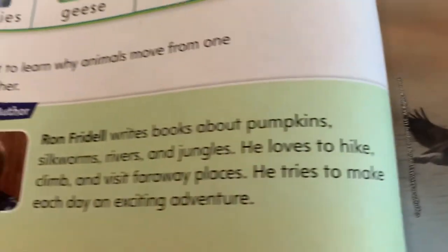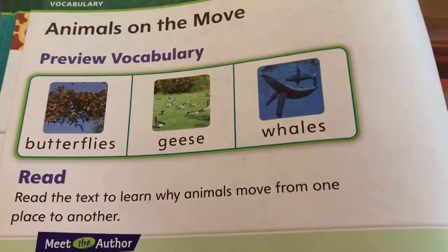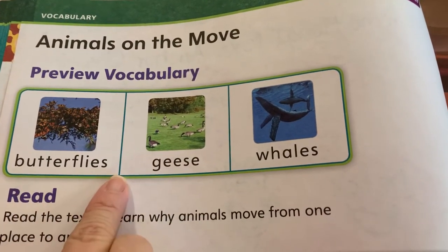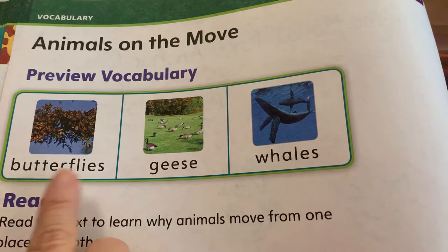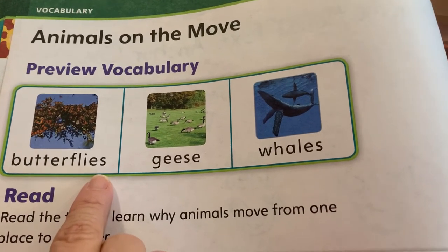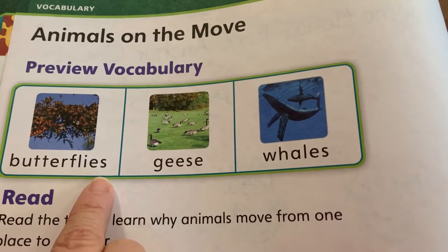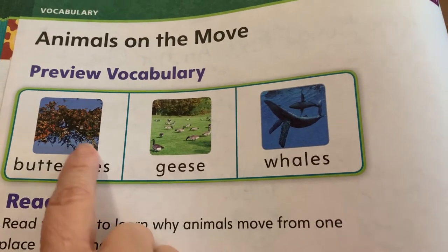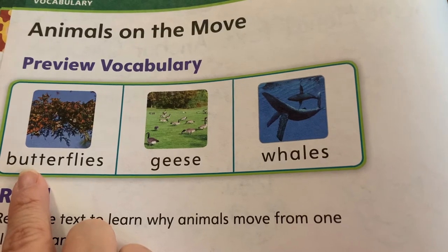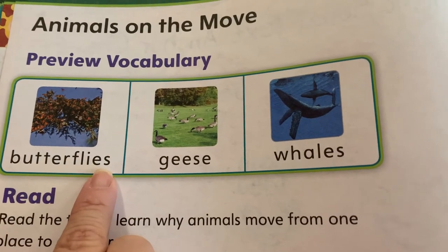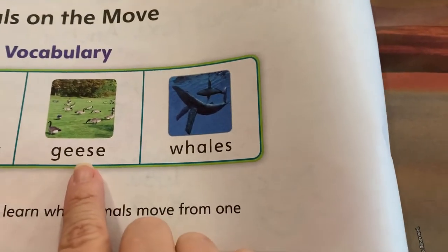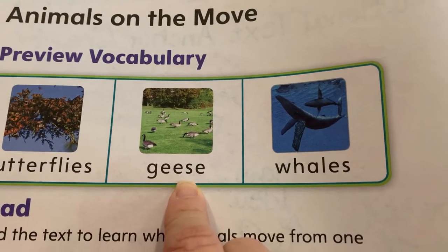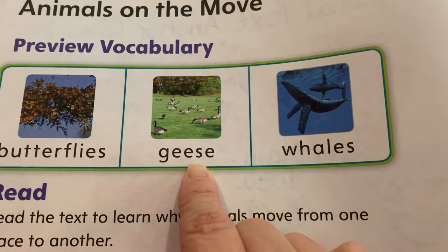Here are some vocabulary words that you will see in the story. This word says butterflies. Butterfly is called a compound word because it's two words that go together to make one word. However, this is more than one butterfly, so this is the plural form: butterflies. We also have geese, which means more than one — if there was just one, it would be a goose.